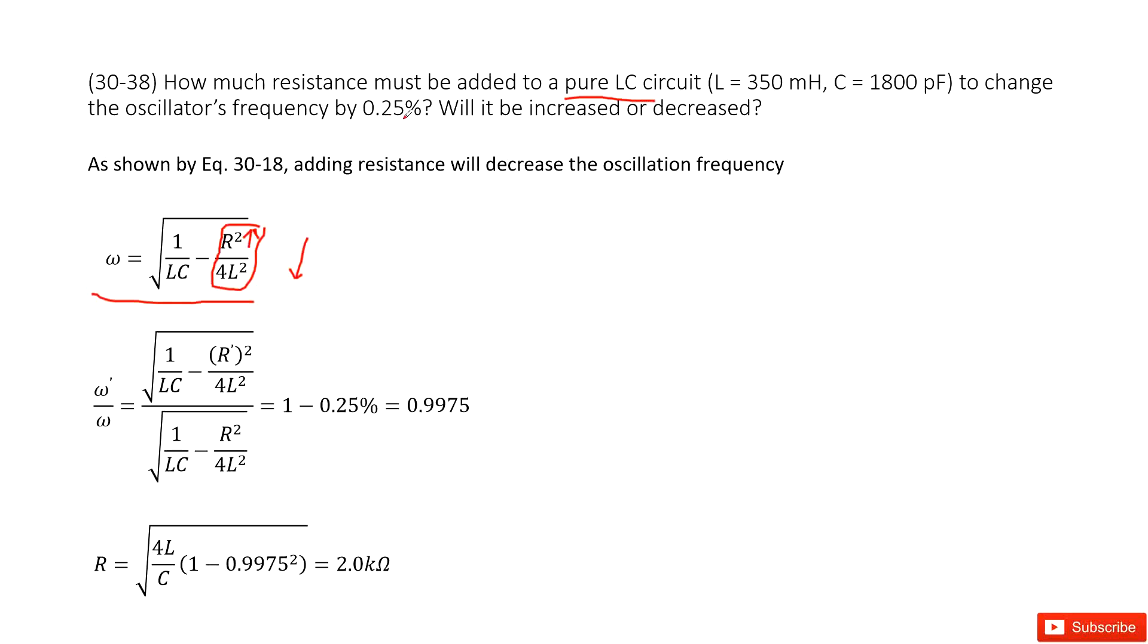Now we can see the final situation as omega prime and the initial situation as omega. So the ratio, the final omega prime divided by initial omega, is 1 minus 0.25%, which equals 0.9975. So we write it there.